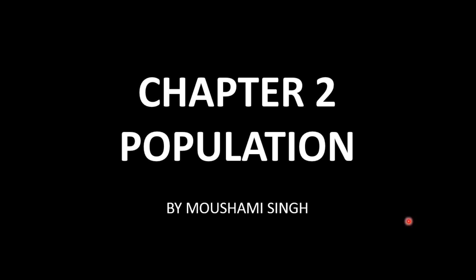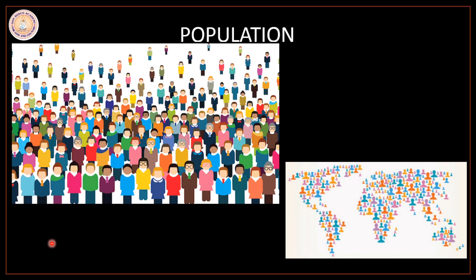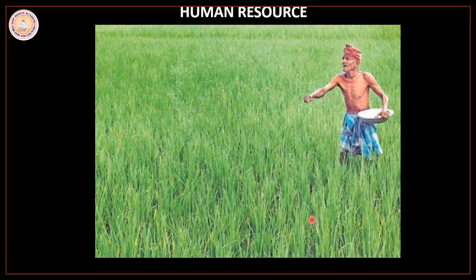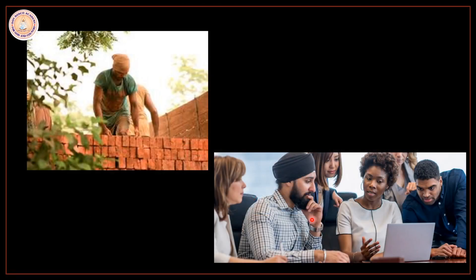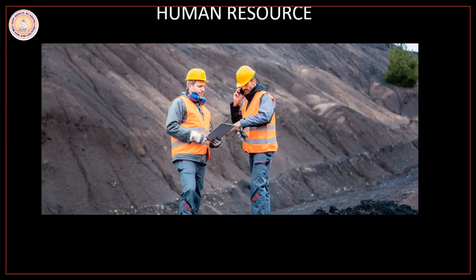The population of an area such as a village or a city consists of all the people who are living in that particular area. A country may have abundant natural resources like minerals and fertile soil, but it needs people to utilize all these resources. Farmers, miners, workers, and professionals are needed to grow crops, bring out minerals, and build roads and houses.